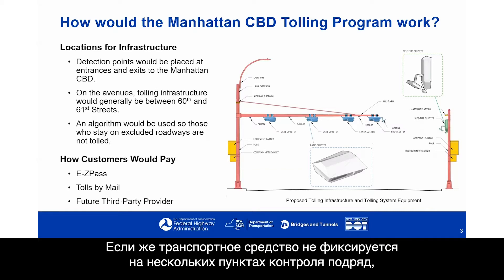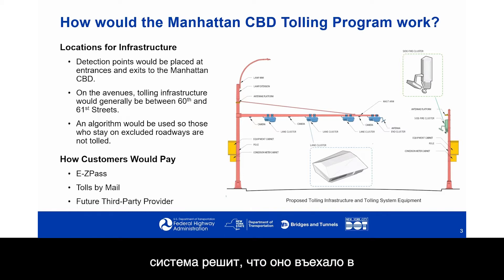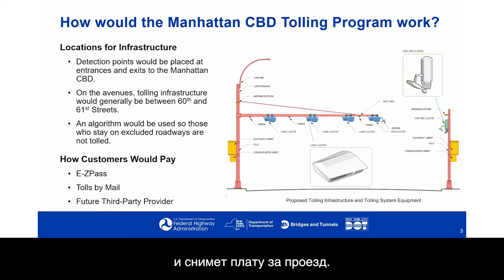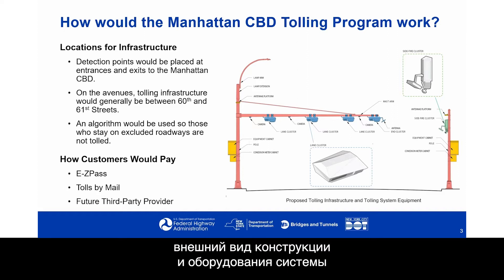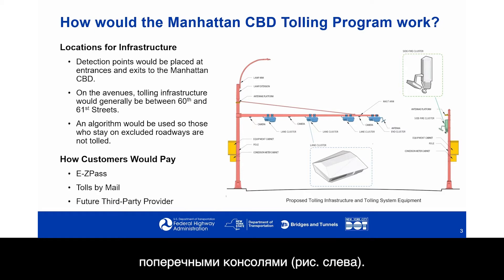If, however, the vehicle is not seen at the next point, the system will determine that it must have entered the Central Business District and a toll would be charged. On the right, you can see an example of what the infrastructure and tolling system equipment would look like — predominantly poles and mast arms.